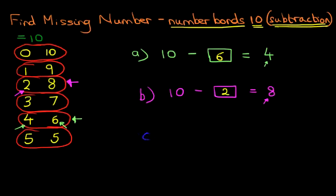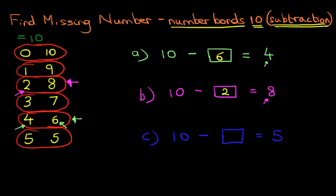Let's do one more, just to finish this off. Suppose we've got 10 minus something equals 5. Again, we're going to look for number 5. Where's number 5? It's over here — it's 5 plus 5 equals 10. Therefore, the answer is 5. 10 minus 5 equals 5.